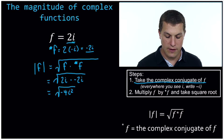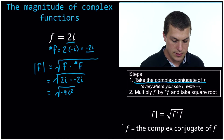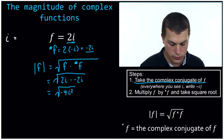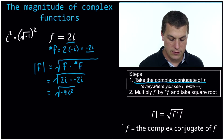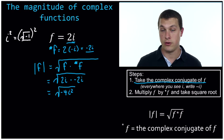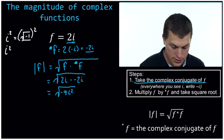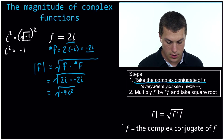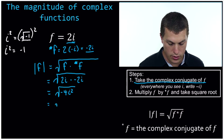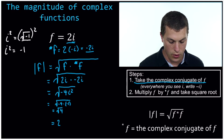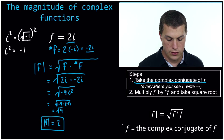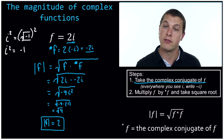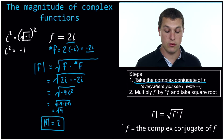Now how are we going to go any farther? We have to remember something really important: i is the square root of negative 1, so i equals the square root of negative 1. What happens when I square both sides of that equation? I've taken a square root of something and squared it, which just gets rid of the radical. That means i squared is just equal to negative 1. So where I have the square root of negative 4 times i squared, I really have the square root of negative 4 times negative 1, which means the square root of 4. And the square root of 4 is 2. So that is the magnitude of 2i.